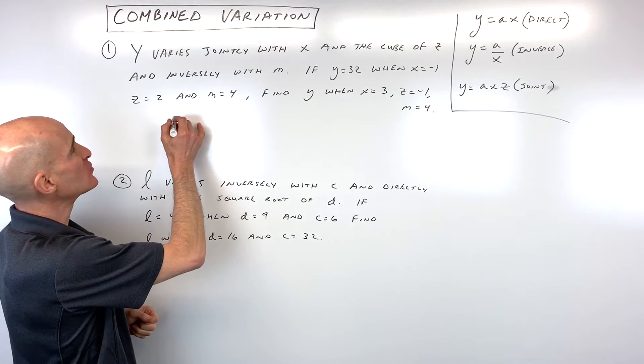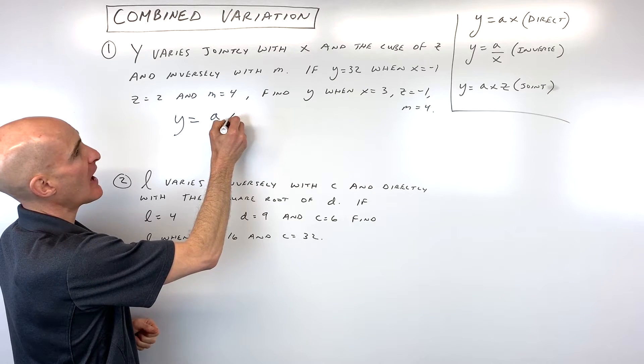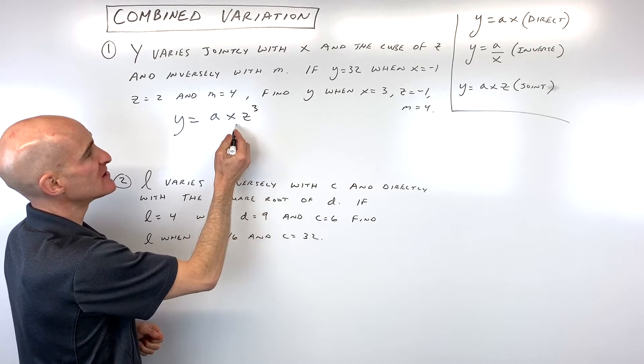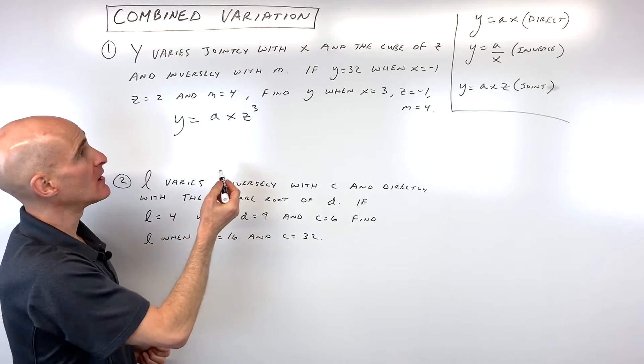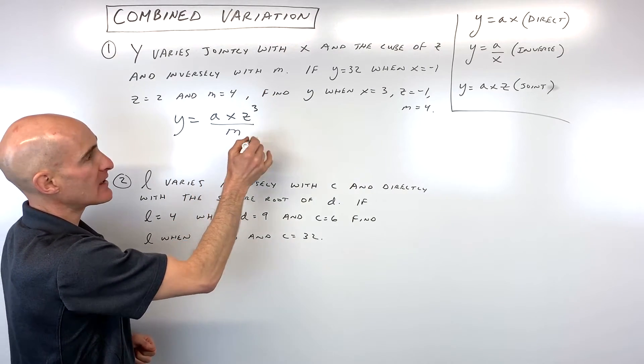So see if we can write that equation. We have y varies jointly with x and the cube of z. So we have x times z cubed. Then it says inversely with m. So inversely, I'm gonna put that quantity in the denominator.